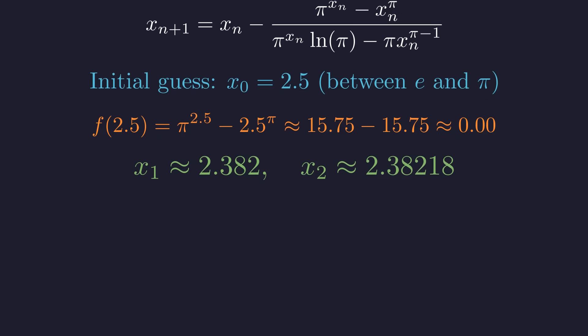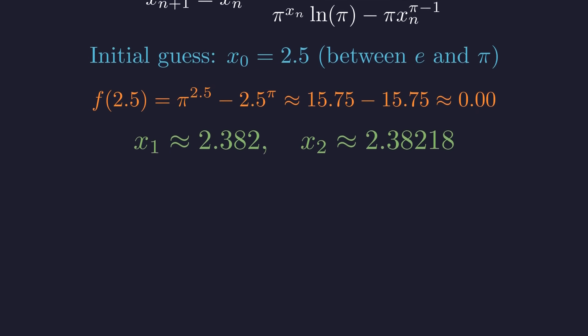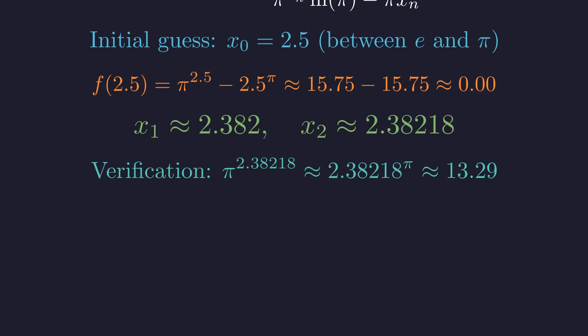After just two iterations, Newton's method converges to our exact solution, approximately 2.38218. This matches perfectly with our Lambert W calculation. Let's verify both pi to the 2.38218 and 2.38218 to the pi equal approximately 13.29. Perfect agreement.